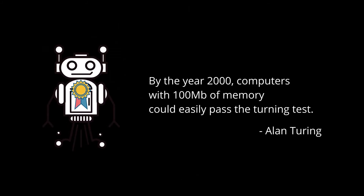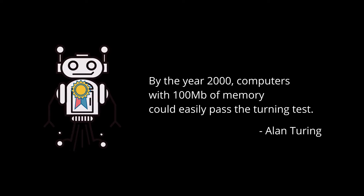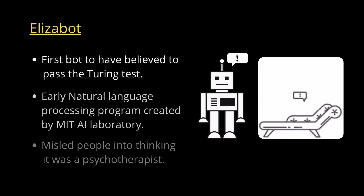Alan Turing predicted that by the year 2000, computers with 100 MB of memory could easily pass this test. The first program believed to have passed the Turing test was called ELIZA — an early natural language processing program created at the MIT Artificial Intelligence Laboratory. It misled many people into thinking it was a psychotherapist by turning their questions back at them.